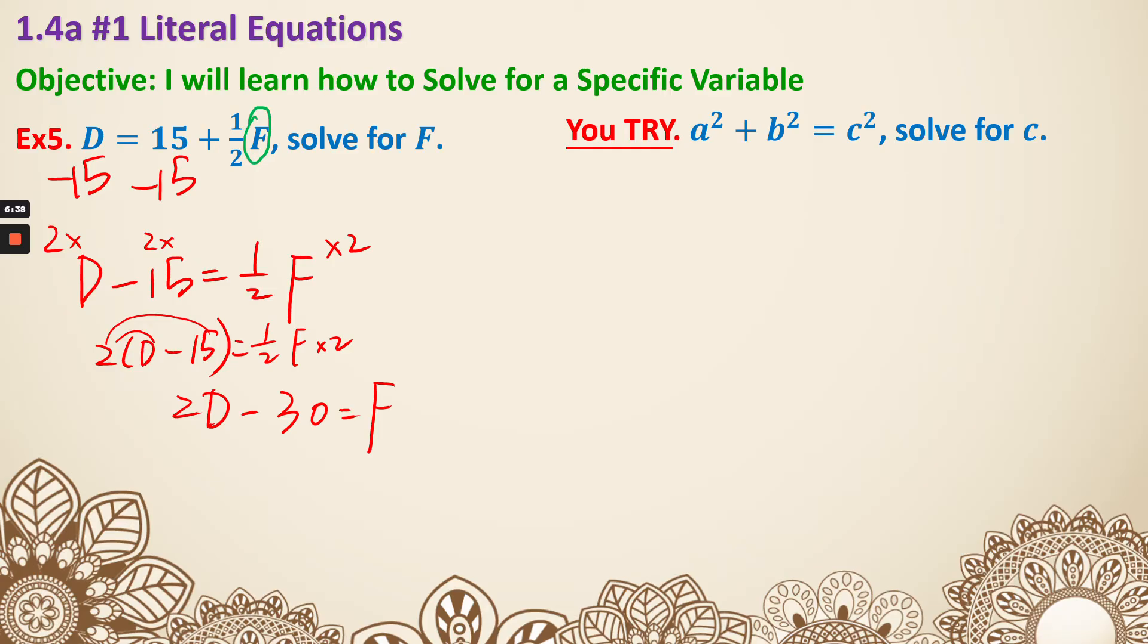Some of you might also think, wait, I don't have to subtract 15. I can also just get rid of the ½. That's fine too. You're going to multiply both sides by 2. But again, it's the same thing. Because there's addition, when you just multiply by a 2, you do need to multiply everything by 2. That instead will give you 2D = 30 + f. I just need to subtract 30 on both sides.